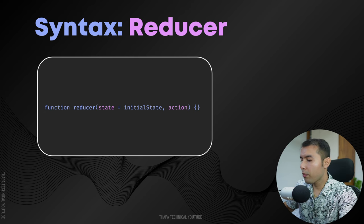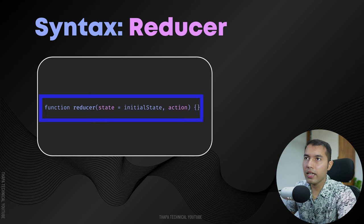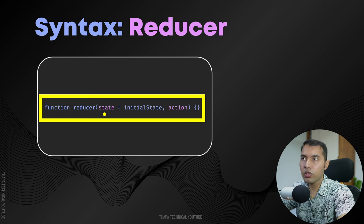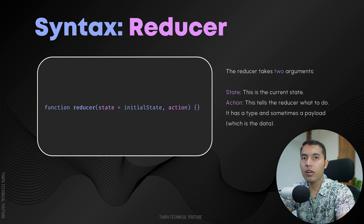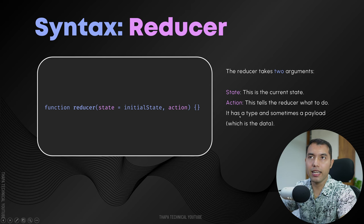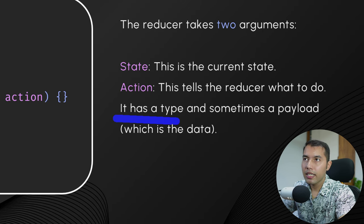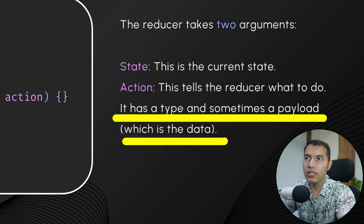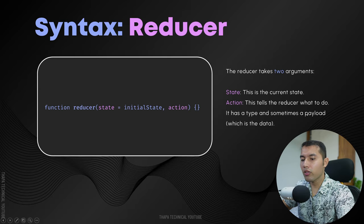The reducer takes two arguments: one is your state and the second one is your action. The state is your current state. The action tells the Reducer what to do — it has a type and sometimes a payload, which is the data. This is very important: in the action we have something called type and then a payload.